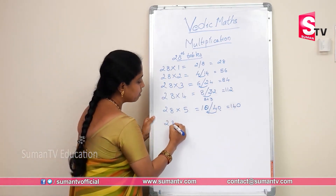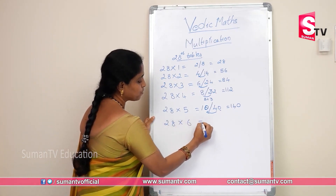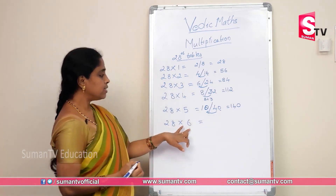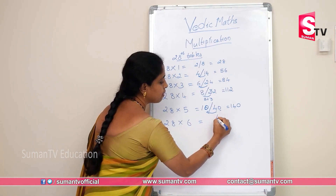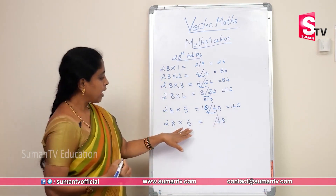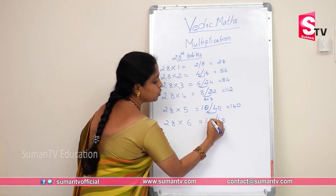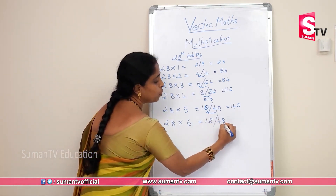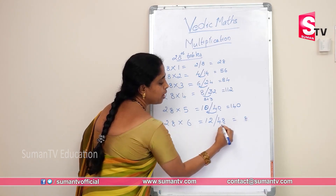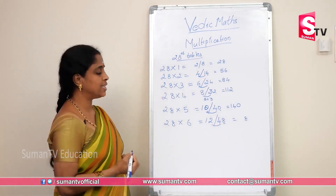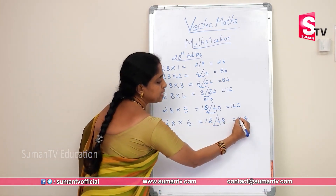28×6: 6×8 is 48. 6×2 is 12. Write 8 in unit place, carry 1. 4 plus 2 is 6, giving 168.